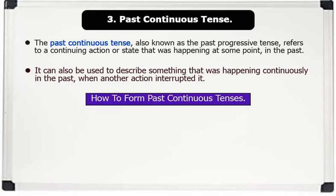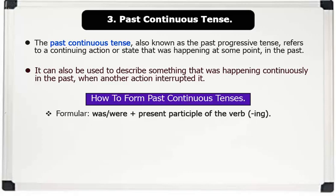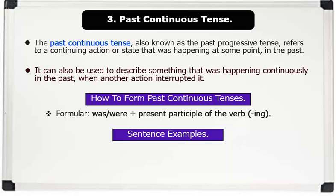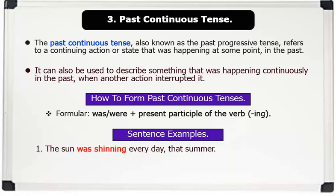How to form past continuous tense. Formula: was or were + present participle of the verb (root + -ING). Sentence examples. 1. The sun was shining every day that summer. 2. I was reading a novel last night.